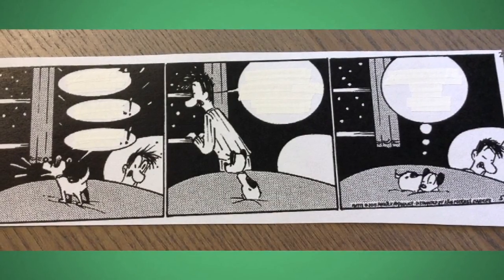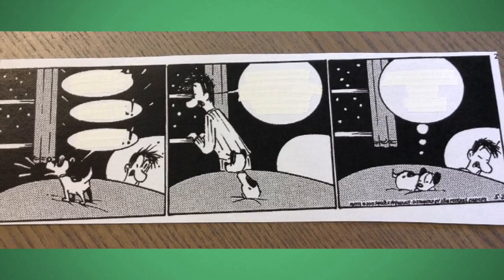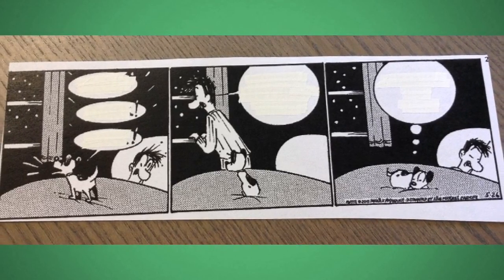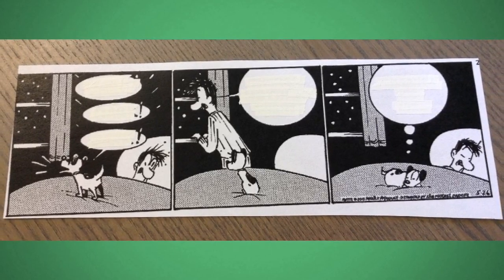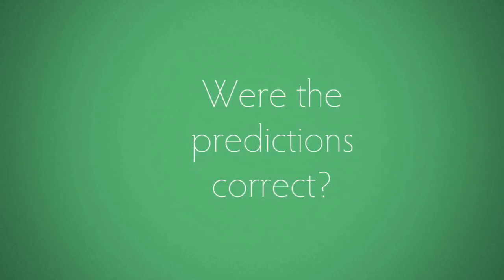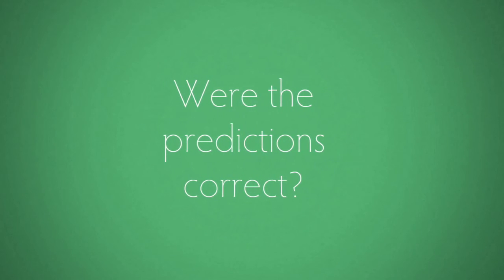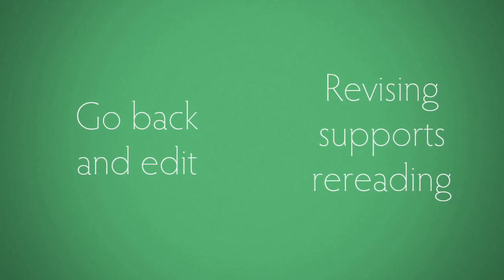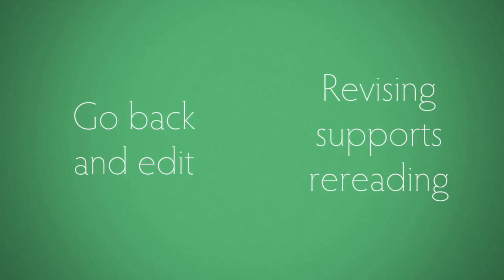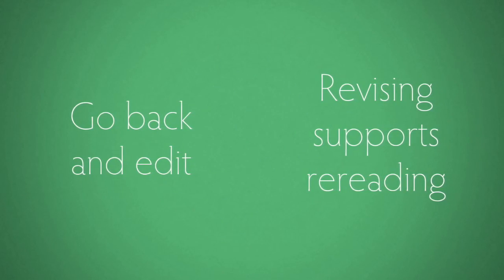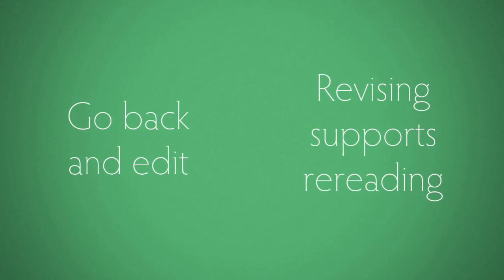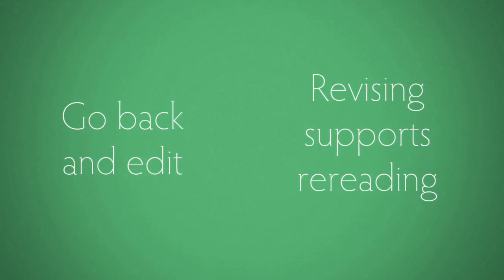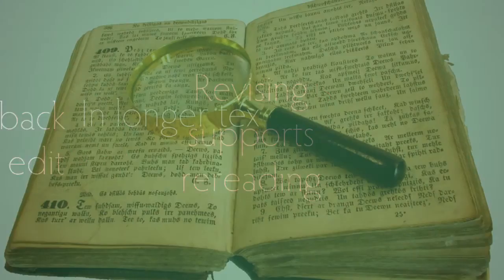Or you could block out all the text, have them look at the illustrations on all three panels, and predict what the entire story is about. If you find their predictions were not correct, have them go back and edit. Revising supports rereading, which is also important for comprehension.